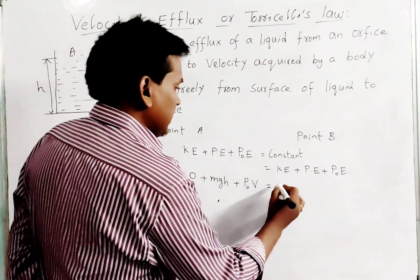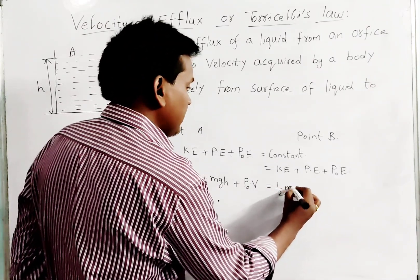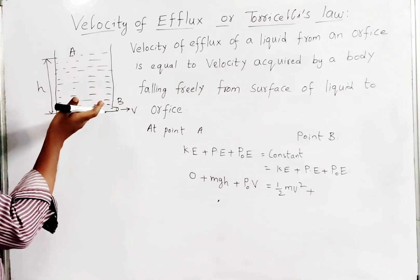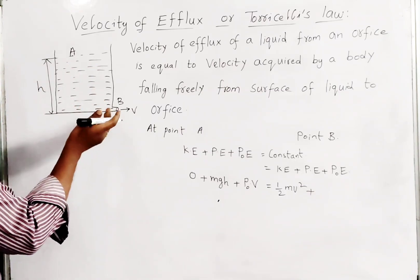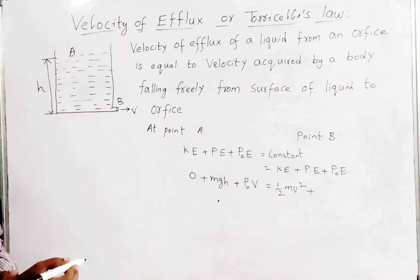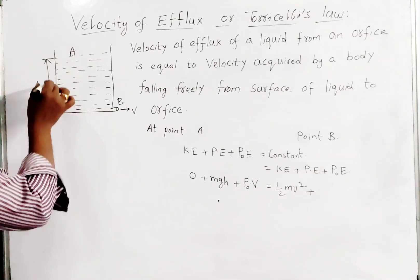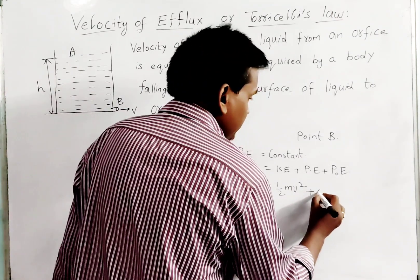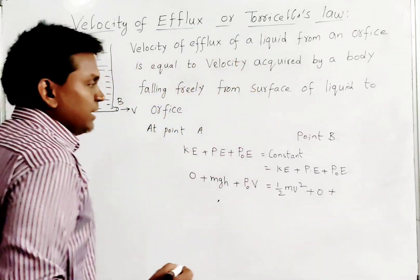At point B, kinetic energy is ½Mv². Potential energy: as it is getting down and reaching to this bottom, the height becomes zero. This is the height we have considered. As the height becomes zero, Mgh becomes Mg×0, so the potential energy will be zero here.